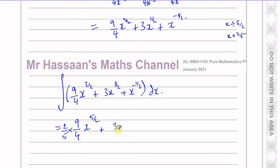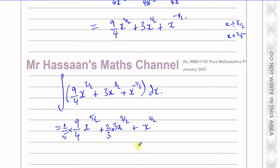Plus 3x to the power of — add 1 to the power — it gives you 3/2. So 1/2 plus 2/2 is 3/2. I've got to divide by 3/2, which means multiplying by the reciprocal 2/3. And then plus x to the power of — adding 1 to the power — gives me a half. If you divide by 1/2, it's the same as multiplying by 2. So it's going to be 2x to the power of 1/2, plus c.